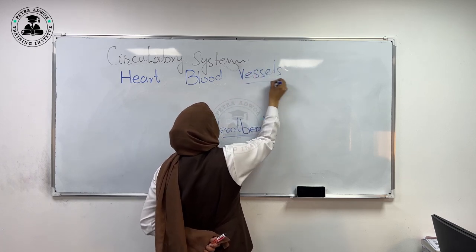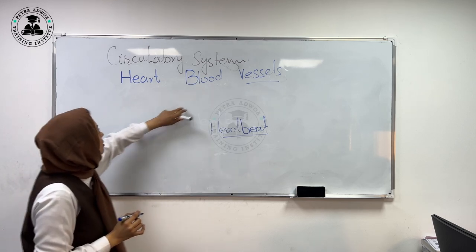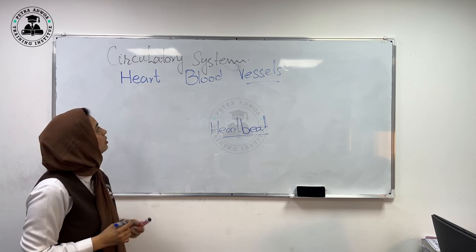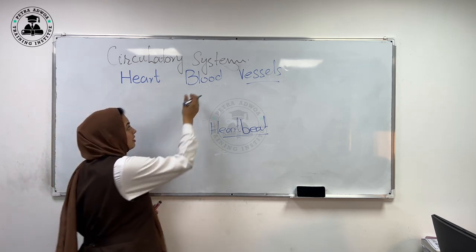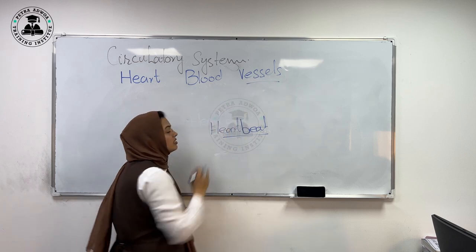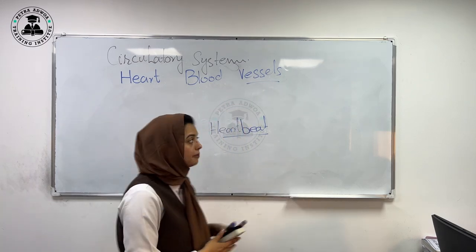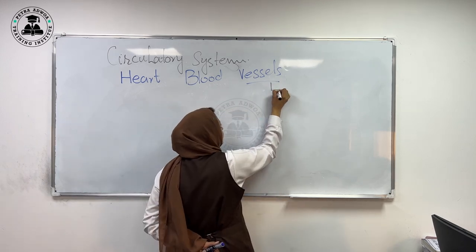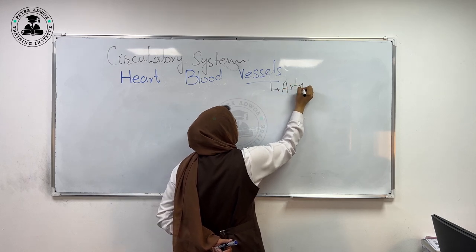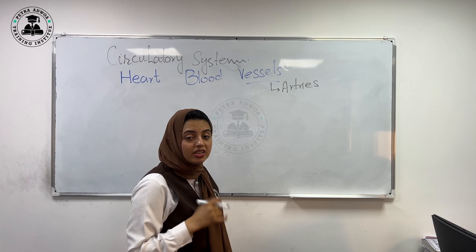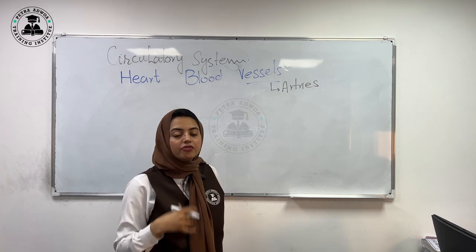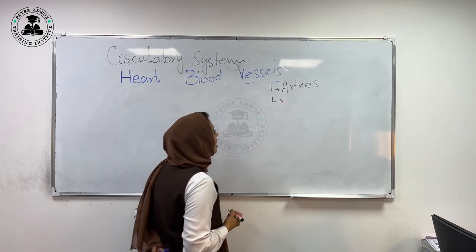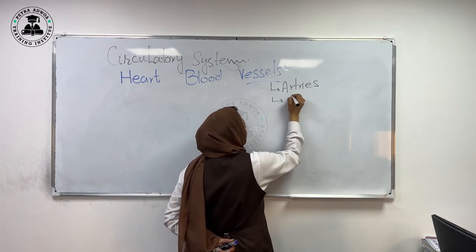The circulatory system is the system in which blood circulates to all parts of your body, by the help of vessels. We have three different types of vessels. The first is arteries. Arteries carry oxygenated blood from the heart to the lungs and to the other parts of the body.